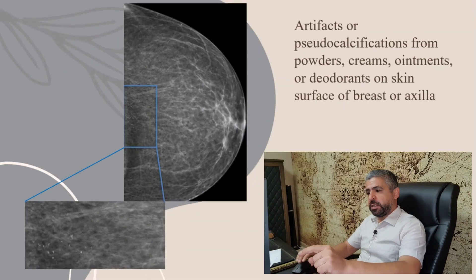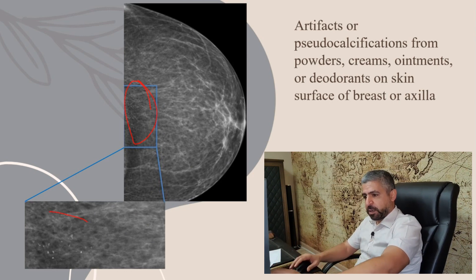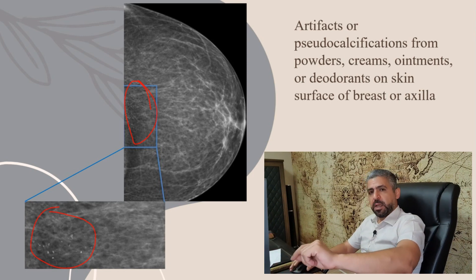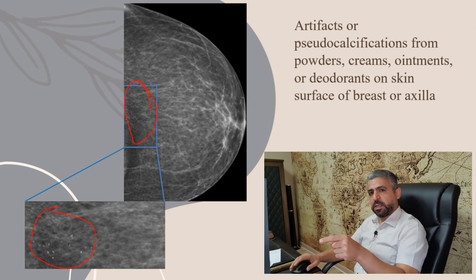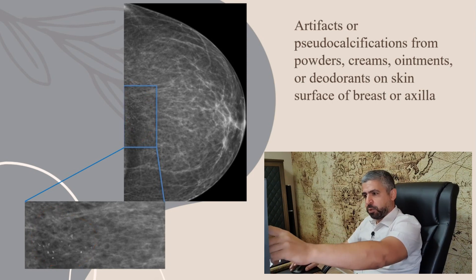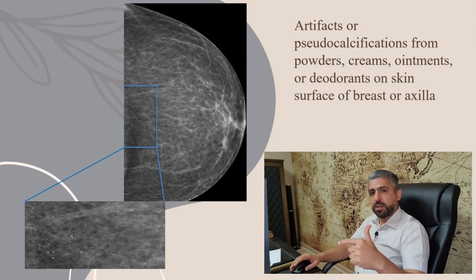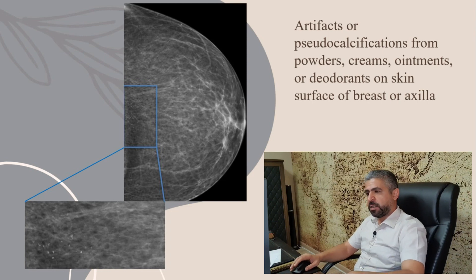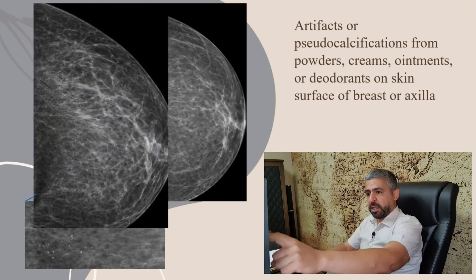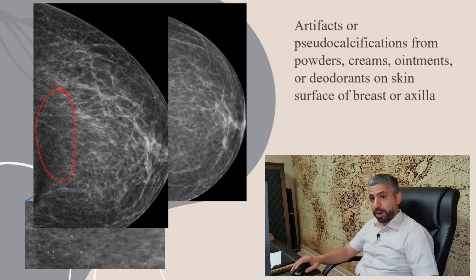For example, look at this case here. If you look carefully, there is a microcalcific pattern which is very suspicious on a mammogram. So if you suspect that this might be an artifact, you just ask the patient to clean up, to wash, or to come on another day after having a bath and without putting any kind of deodorants. And the result of the same patient is like that — you can obviously see that there is nothing here and it was just an artifact. This is a very important thing to be aware of.